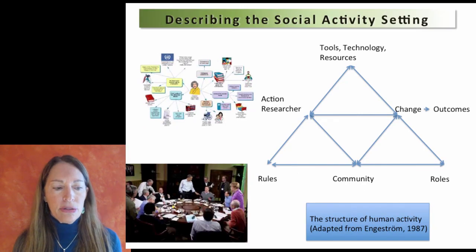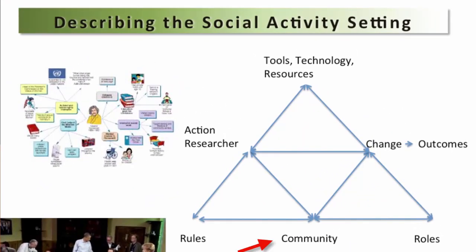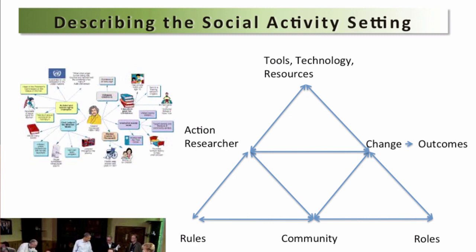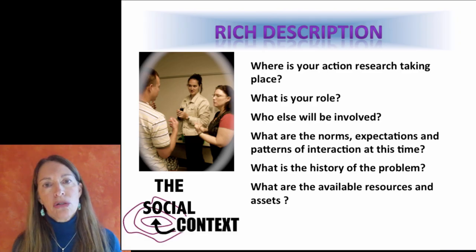Beyond the physical space, you want to describe the social space. Who are the community players? How do they relate to one another? What's the structure of the interrelationships, the roles people have, and the leadership roles people are engaged in, and where do you fit in that social context? There's generally a history to any challenge — you probably aren't the first person to try to accomplish this goal, and there may be rules or regulations that are part of trying to solve this problem. Giving some sense of the history of the problem in your context would be helpful, as well as what resources you have — technology, money, time — that will help you develop a solution to this inquiry.